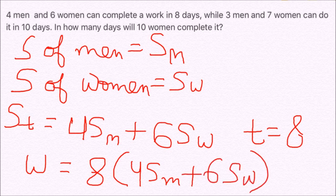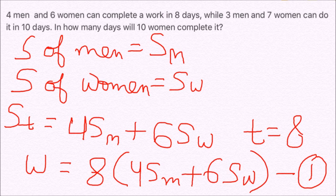So let us say this is equation 1. Now coming to the second case which says that 3 men and 7 women can do the same work in 10 days.